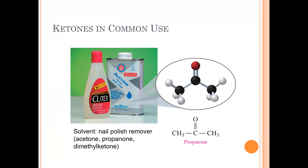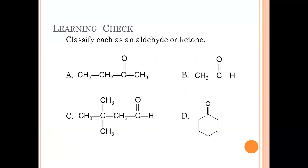Acetone is the simplest ketone you can make. It's commonly found in nail polish remover, and it's also produced in your body when you break down fats and lipids.